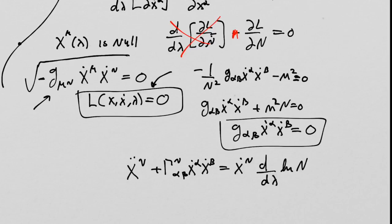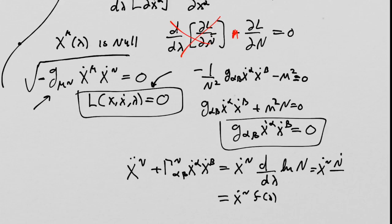This is often written in books where they say: when you work this out, you just get some function of lambda times the tangent vector. The logarithmic derivative appears here as n-dot over n. This variational method works pretty generally, but it is important to understand both the mathematical method and this variational method.